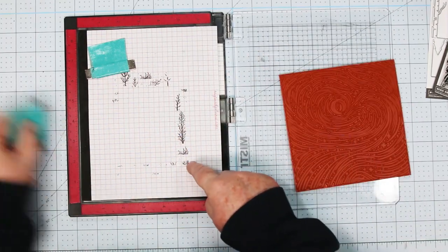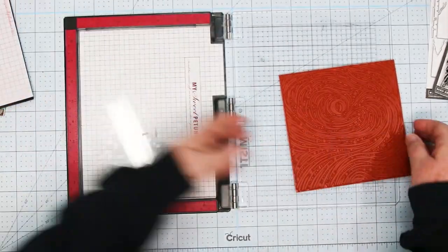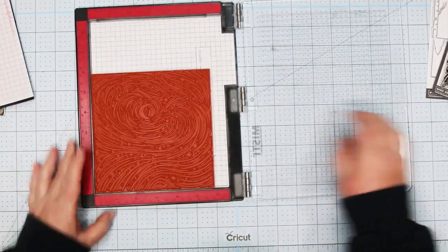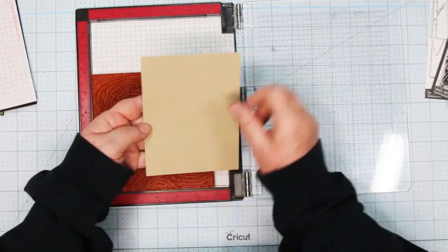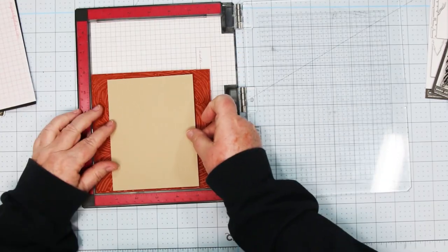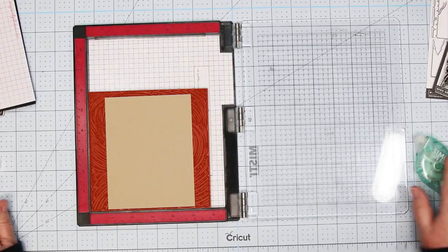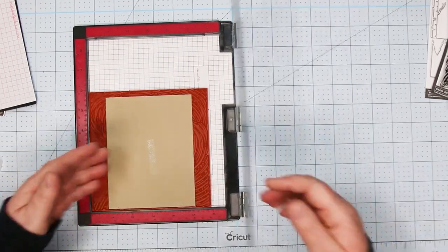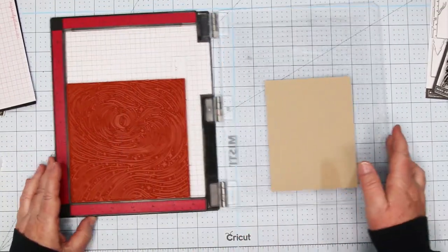Now you'll notice that these are rubber stamps and they've got a foam backing. So you need to take the foam and the paper out of your MISTI. I'm putting my stamp in there face up. I'm adding a piece of my cardstock right over top and I'm going to add some adhesive to the back of it so I get it to stick to the lid of my MISTI.